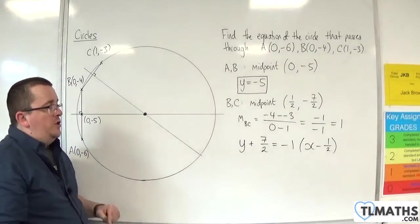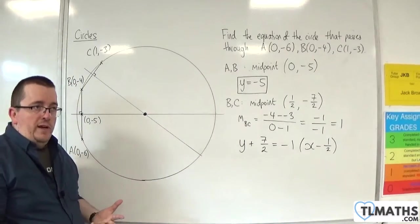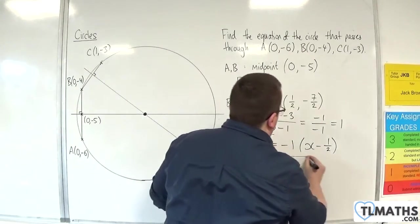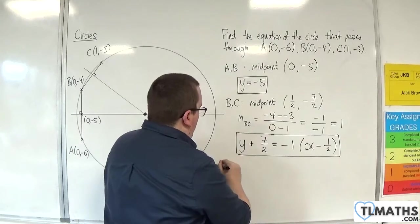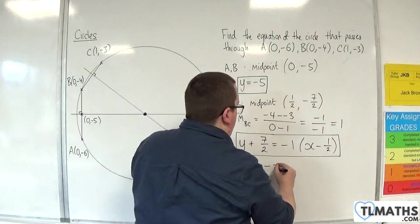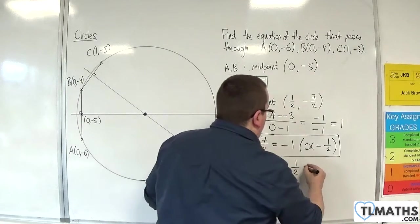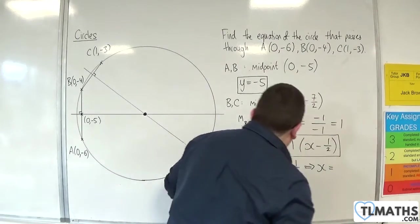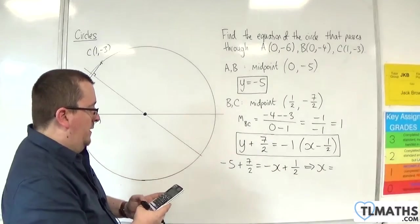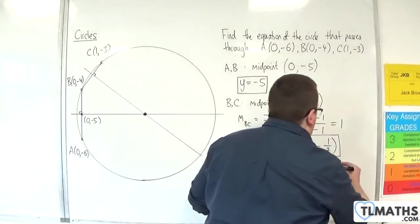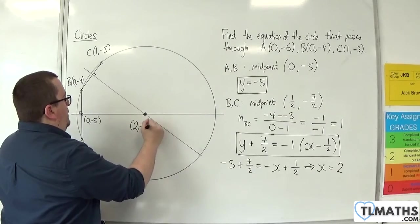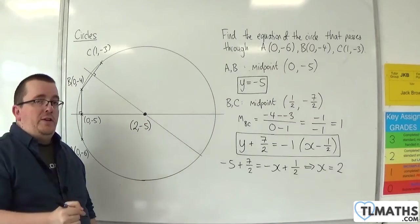So what I can then do is, I don't need to rearrange this into any other form. I can just substitute y = -5 into this. So -5 plus 7/2 is equal to -1 times this, so -x plus 1/2. So -5 plus 7/2, take away 1/2, and then it's the negative of that, so that would be 2. So this point here is (2, -5). So I've now found the centre of my circle.